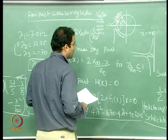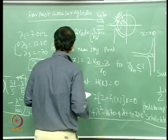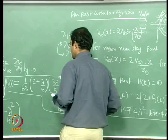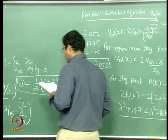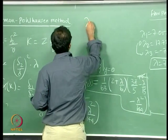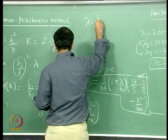At the stagnation point, with λ = 7.052, we can calculate the boundary layer thickness δ. Using the expression Z = δ₂²/ν and the near-stagnation velocity u∞ = 2V∞(X/R₀), we find δ₂² = 3.526 ν R₀/V∞, so δ₂/R₀ = √(3.526/Re_{R₀}), where Re_{R₀} = V∞ R₀/ν is the Reynolds number.